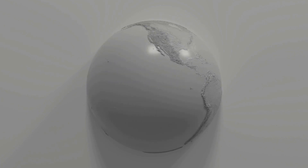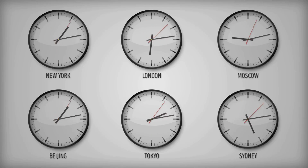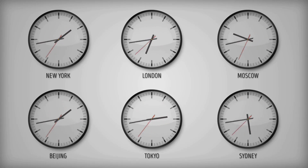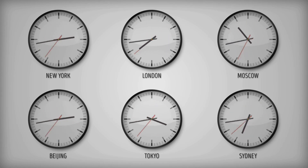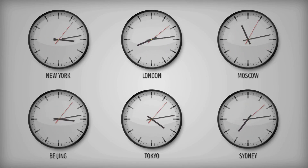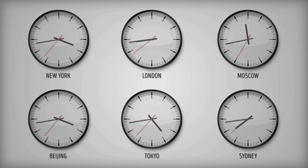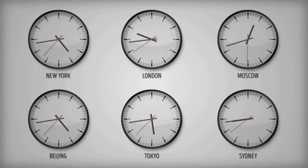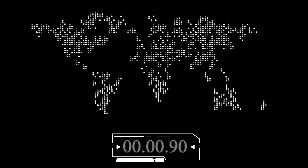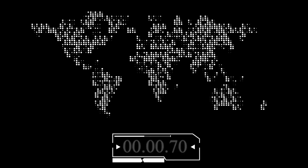To understand time zones better, let's look at some real-world examples. Time zones are regions of the Earth that have the same standard time. They're crucial for coordinating activities across different parts of the world — without time zones, scheduling international meetings, flights, and even phone calls would be chaotic.